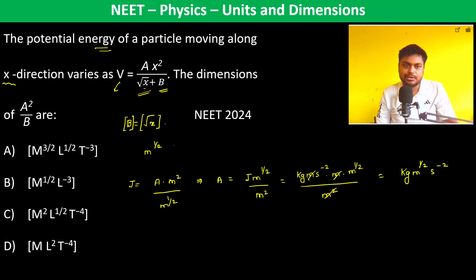The question is: what is the dimension of A²/B? Therefore, A²/B has dimension kg²⋅meter¹⋅s^(-4) divided by B which is m^(1/2).